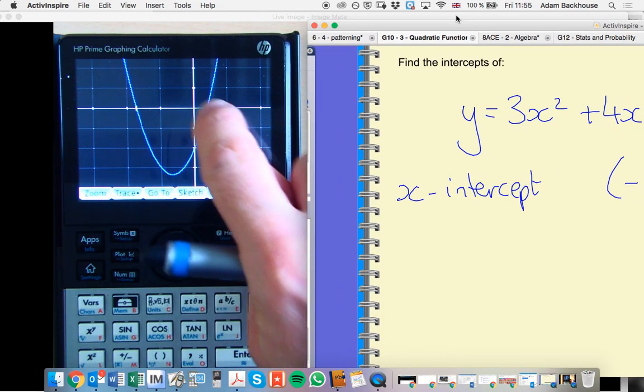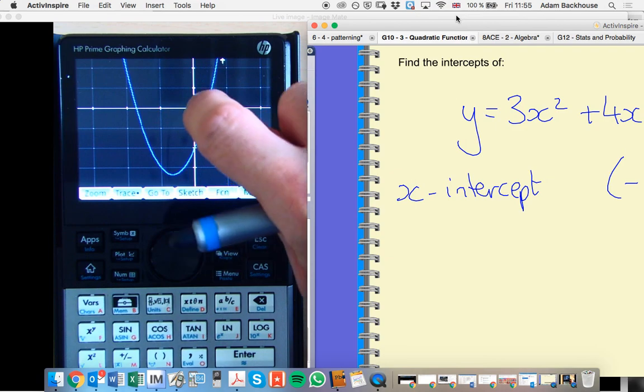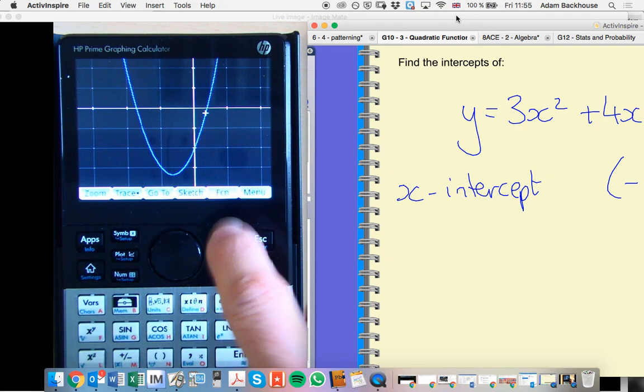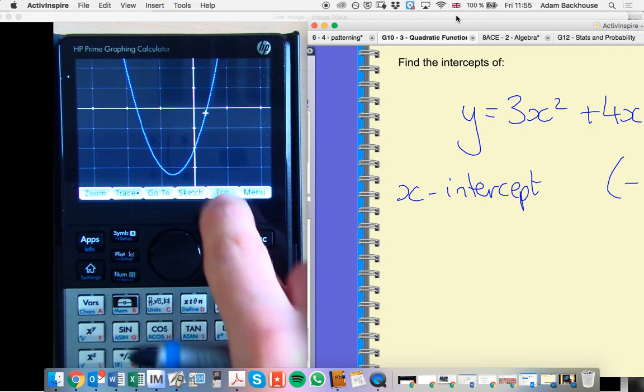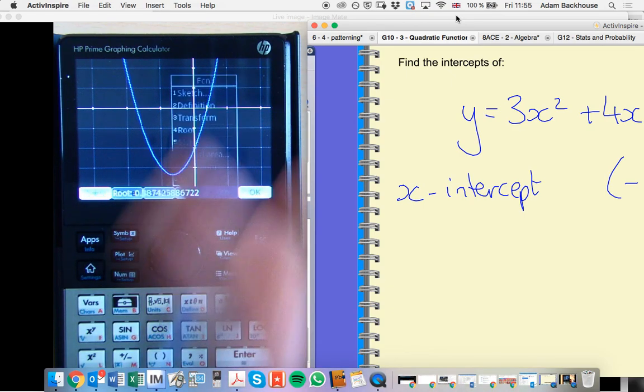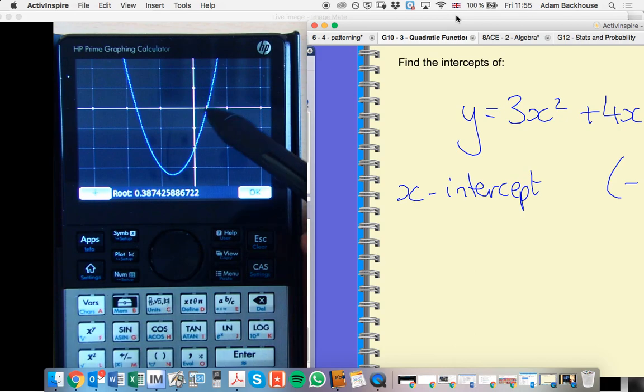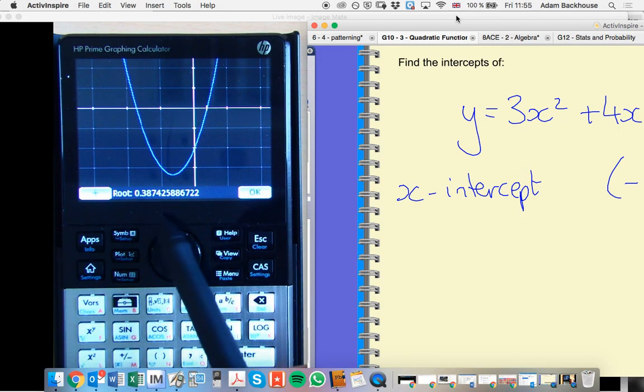Okay, so let's go. I'm going to tap near the other intercept. Oh, that's not very near at all. Near the other intercept. I'm going to go back to that FCN on the menu, and we're looking at root again. So exactly the same process. We've just tapped near the other intercept. There we go, 0.387.